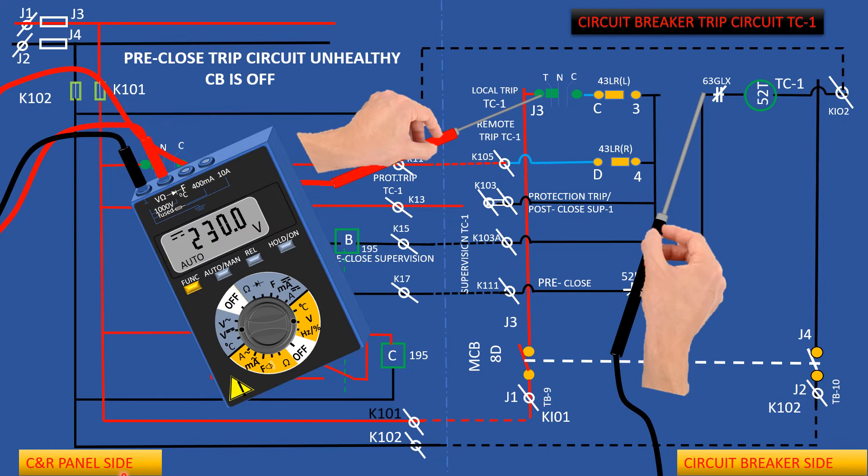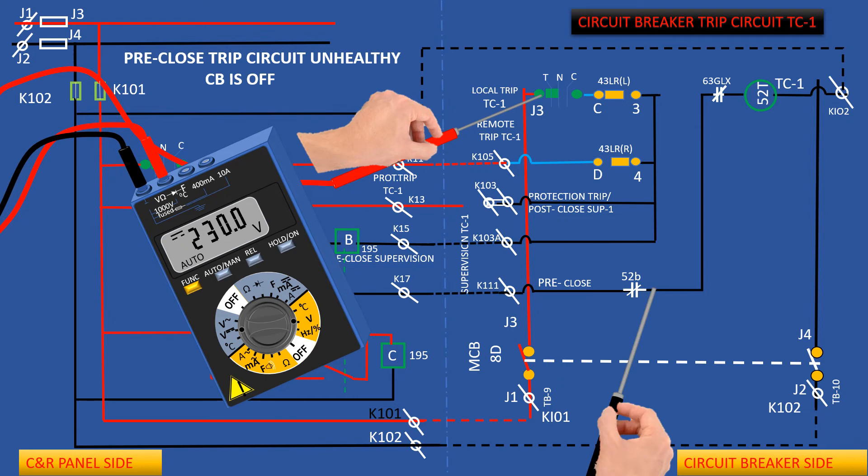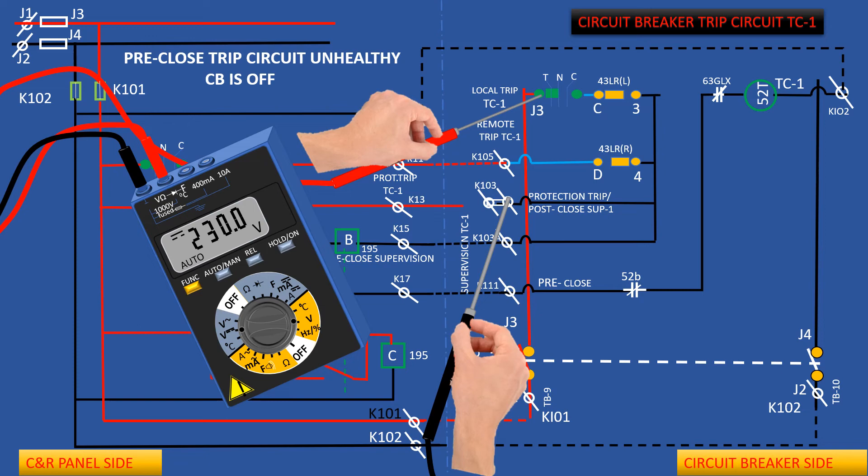Multimeter shows 230 volt DC, that means it is okay. If zero volt would be shown by the multimeter here, then we shall be sure that fault would be at that location. Identify where the problem is situated. Check connection, contactor, etc. of related parts.